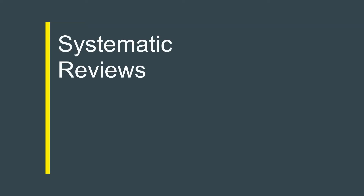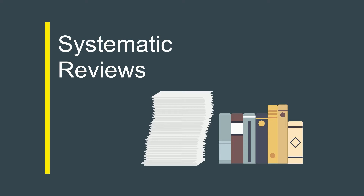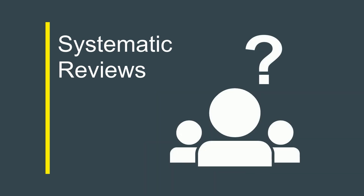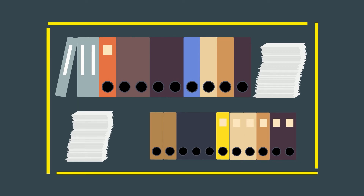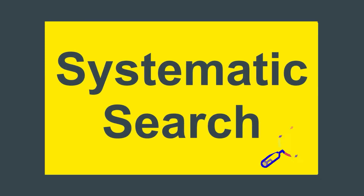Systematic reviews bring together individual studies on the same topic to answer a single research question. But there are hundreds and thousands of scientific papers published each day. So how can you be confident that you have retrieved all the evidence relevant to your research question? A systematic search is the solution.